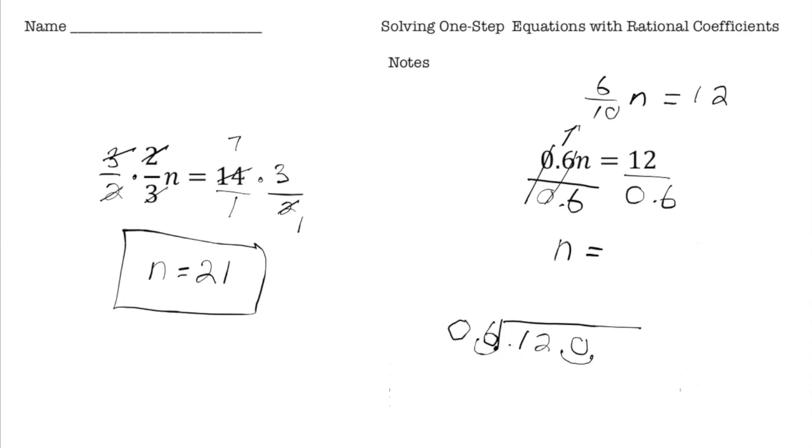So I know 6 goes into 12 two times. And 6 times 2 is 12. And subtract, bring down the 0. And I know 6 goes into 0, 0 times. And we're going to end up with just 20. So our answer is going to be n equals 20.